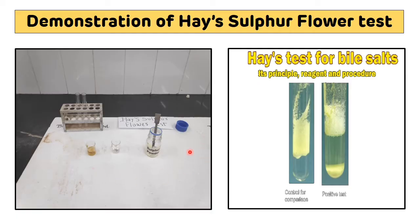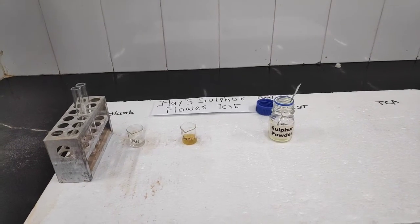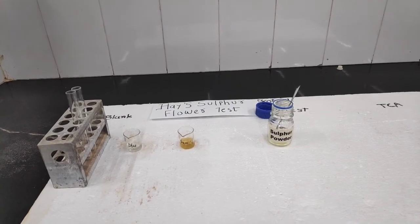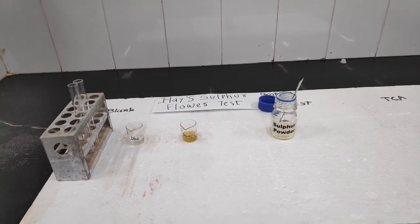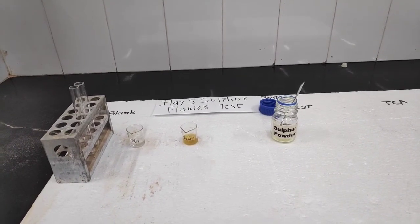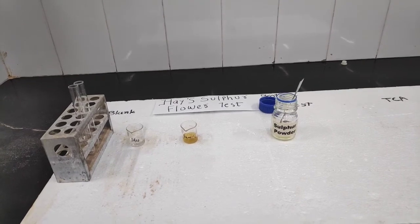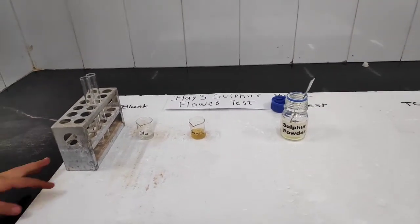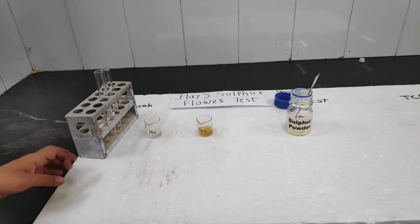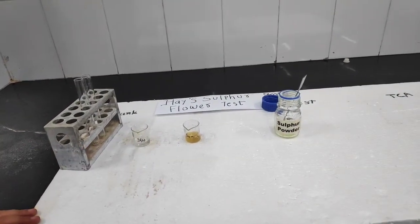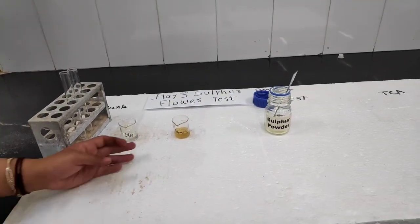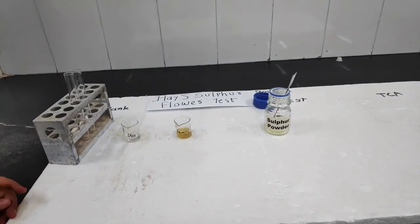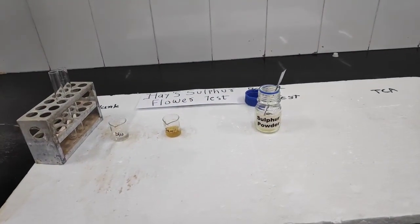Now we will see the demonstration of the Haze Sulphur Flower test, which is done for the detection of bile salts in the urine sample. For this test, we need distilled water for the control, abnormal urine as the sample, and sulfur powder.